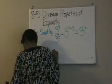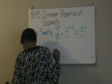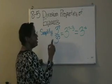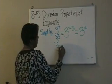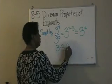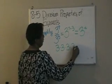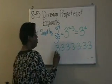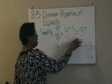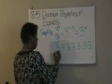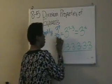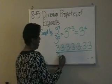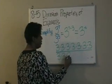I want to show you another way you can actually work this problem. 3 to the 7th power means 3 written 7 times. That's 3 to the 7th power over 3 to the 3rd power, which means 3 written 3 times in the denominator.